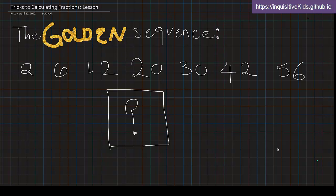This is our first lesson on tricks to calculating fractions. Around 5th grade, 4th grade, 6th grade, a lot of the problems are going to involve fractions and whole numbers. But the whole numbers are most likely going to be in sequences, so you're going to have to find patterns. But first, I want to introduce you to the golden sequence.